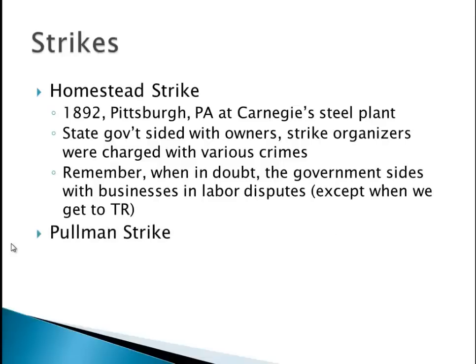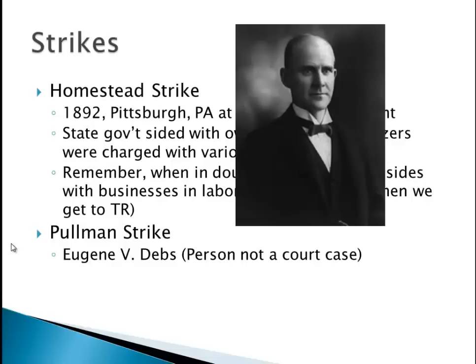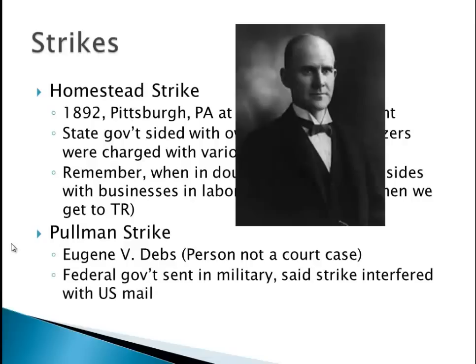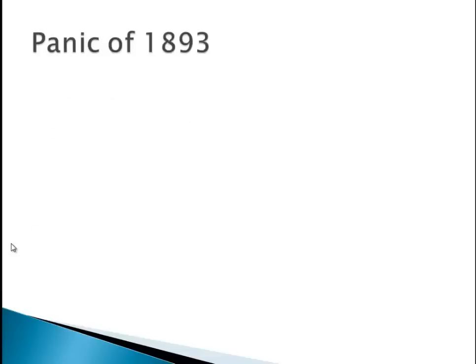The Pullman Strike, named after the Pullman railroad cars. We have Eugene V. Debs — he is a person, not a court case, don't let that V throw you off. We will see him in many chapters — he'll be around for about 30 years. He is the leader of this strike, and the federal government sent in the military. They said the strike interfered with U.S. mail, so many of them were arrested.